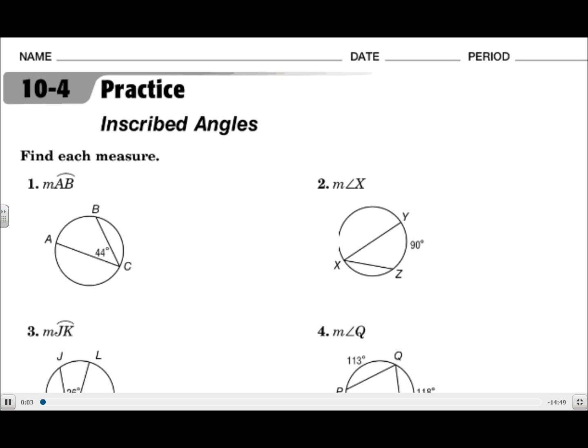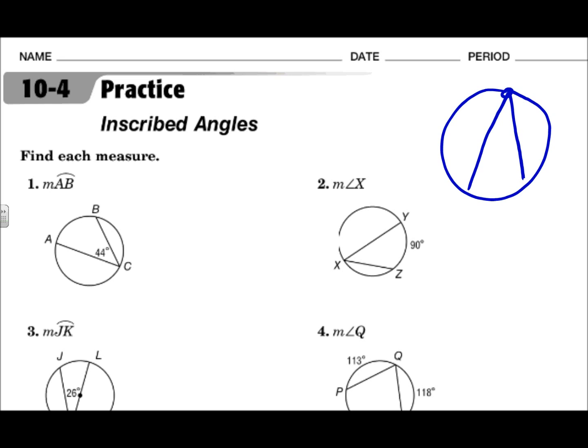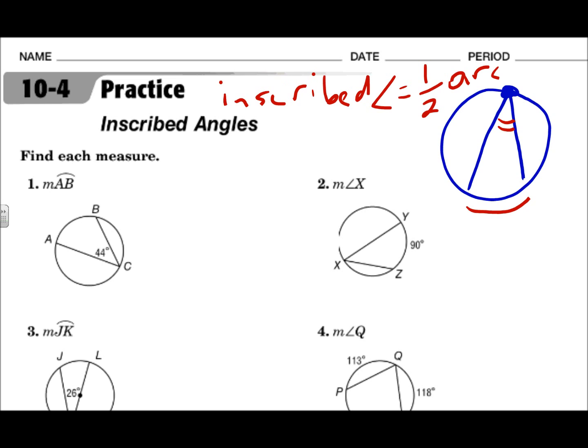This is lesson 10.4: Inscribed Angles. Your objectives are to find the measures of inscribed angles and find measures of angles of inscribed polygons. An inscribed angle is an angle whose vertex is on the circle. The measure of the intercepted arc is twice that of the inscribed angle, so the inscribed angle equals half of the intercepted arc. The arc is double the inscribed angle, or the angle is half of the arc.